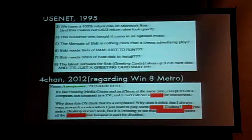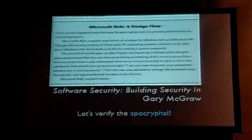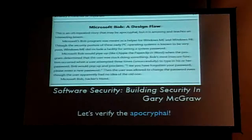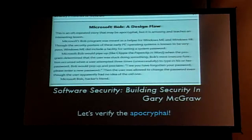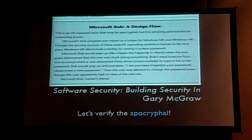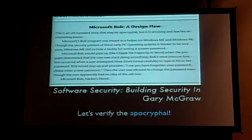People are hating on new interfaces — that's nothing new. But on the security side of things, it's kind of interesting because Windows 8's Metro interface has some of the same kinds of vulnerabilities as HMI software. In Gary McGraw's book, Software Security, he has a sidebar where he talks about a design flaw in Microsoft Bob. He noted it may be apocryphal, but essentially the idea is that in Microsoft Bob, if you got your password wrong three times...